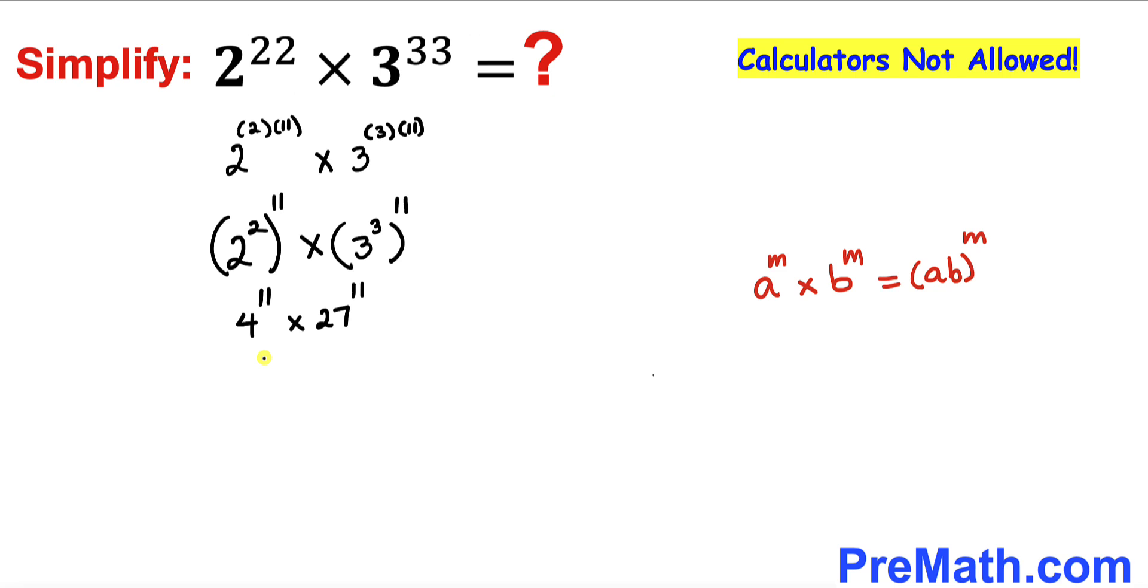So therefore this whole thing could be written as 4 times 27 whole power 11. And now let's focus on this part 4 times 27. If we multiply that is going to give us 108. So therefore this is going to give us 108 whole power 11. And that is our simplified answer.